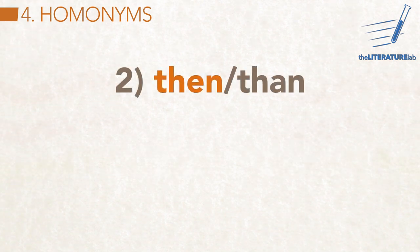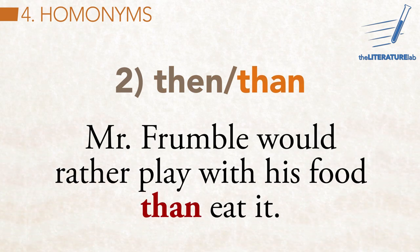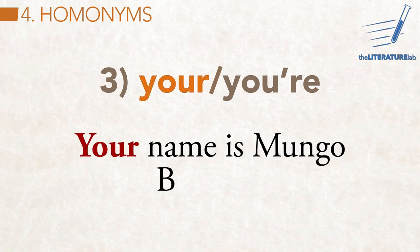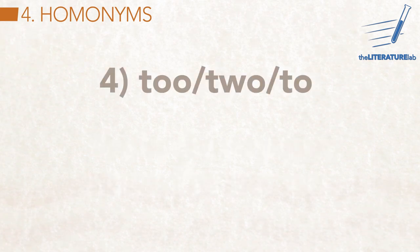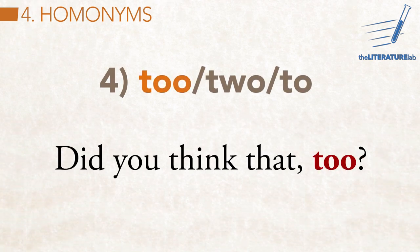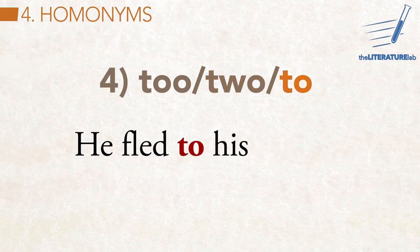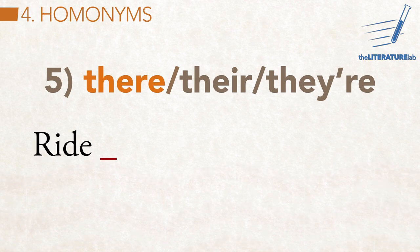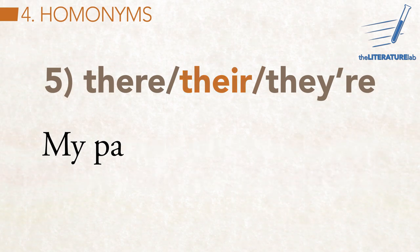Other common homonyms: 'than' shows that time has passed, while 'then' shows a comparison. 'Your' is the possessive form, while 'you're' is a contraction of 'you are.' 'Too' just means also; 'two' is the number; and 'to' indicates motion in a direction or identifies a thing affected by something else. 'There' indicates some place that's not here, while 'their' is the possessive form of 'they.'